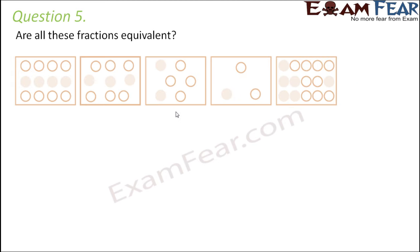Question number 5: Are all these fractions equivalent? First of all we need to determine what these fractions are. In order to find out how much each fraction is, you count the total number of circles in each diagram and the number of shaded circles. We will do that for each of them — the total circles and the shaded circles — and then see what fraction of the circles are shaded.